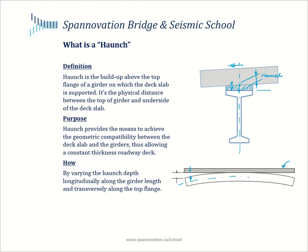So a haunch is used to fill in that gap and achieve geometric compatibility. And we are able to do so by varying the geometry of the haunch longitudinally and transversely along the top flange.